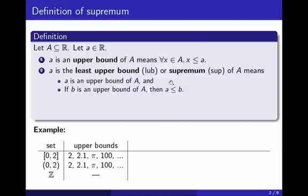So again, it is an upper bound which is the smallest of all the upper bounds. So if I go back to these two examples, both for the closed interval and the open interval, the least upper bound, or supremum, is 2. Whereas for the integers, there is no upper bound, therefore there is no least upper bound.